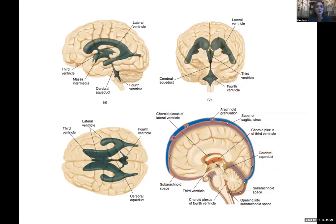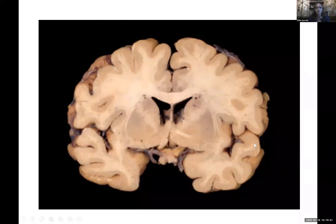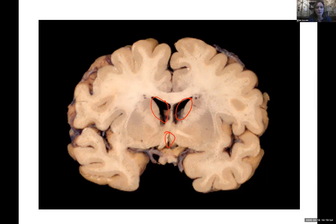This diagram shows the lateral ventricles, the third ventricle, and the fourth ventricle. The connection between the third and fourth is known as the cerebral aqueduct. Here we can see one lateral ventricle and another lateral ventricle, and the third ventricle is right there - it's a little more squished than it normally would be because the brain collapses when cut.